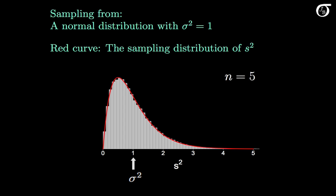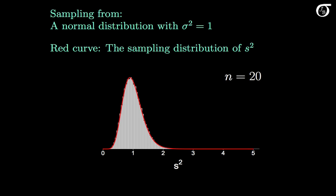It's definitely not normal. I'm truncating the plot at 5 — there are a few values of s squared greater than 5, but it's less than 1 in 1000. When we increase the sample size to 20, the grey histogram represents 100,000 values of s squared for samples of size 20 from a normally distributed population where sigma squared equals 1. Although the distribution is a little closer to normal, there is still some right skewness, and because of the larger sample size the values are a little more tightly grouped about the true variance of 1.